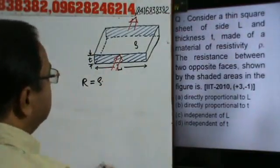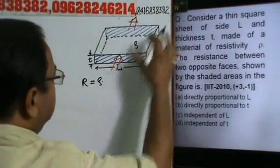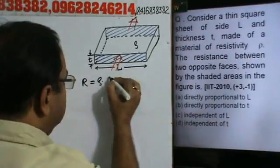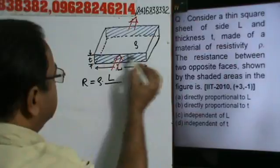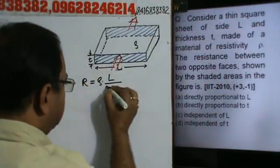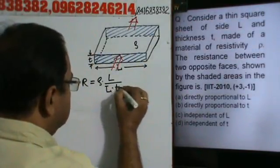Rho L by A. So, this is L. And what is the area of cross section? This will be the area of cross section. So, this will be L into T.